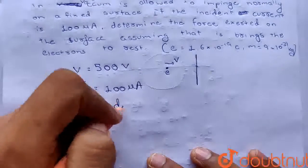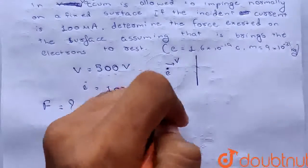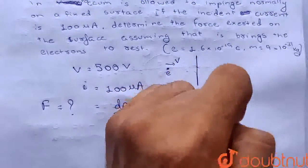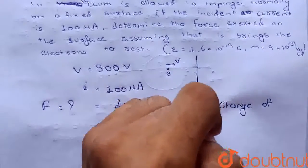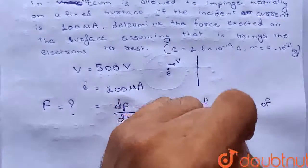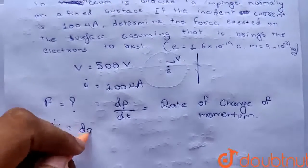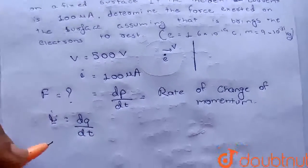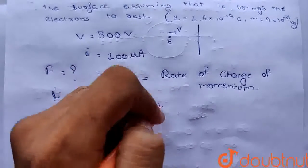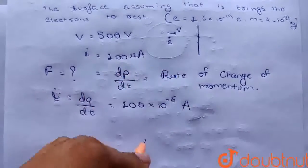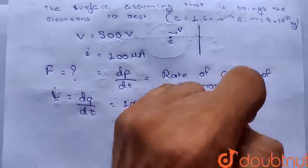Force होता है हमारा dp/dt, यानी rate of change of momentum। और हमें पता है current I दिया गया है — I होता है dq/dt। तो उसकी value है 100 into 10 raise to power minus 6 amperes, जो हो गया 10 raise to power minus 4 amperes।